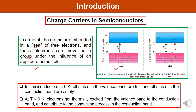At T equal to zero Kelvin, all the states in the valence band are full and all the states in the conduction band are empty. At T greater than zero, electrons get thermally excited from the valence band to the conduction band, and these electrons contribute to the conduction process.